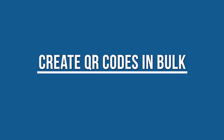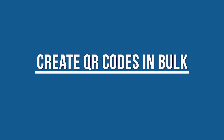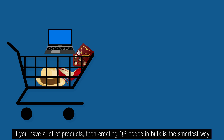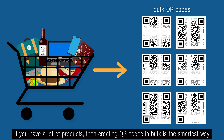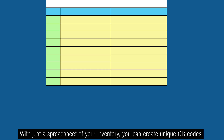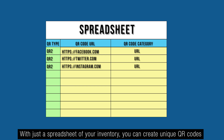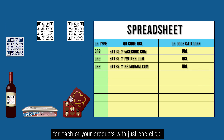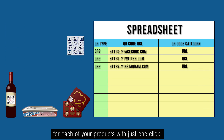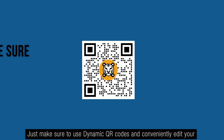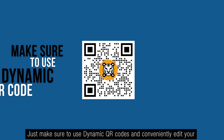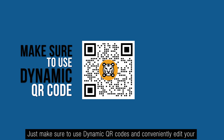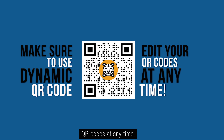Tip number four: Create QR codes in bulk. If you have a lot of products, creating QR codes in bulk is the smartest way. With just a spreadsheet of your inventory, you can create unique QR codes for each of your products with just one click. Just make sure to use dynamic QR codes and conveniently edit them at any time.